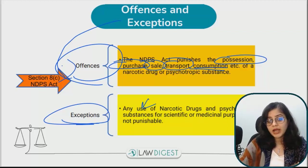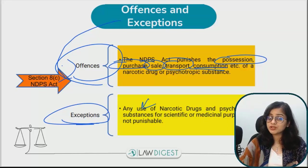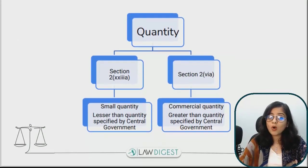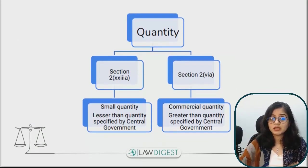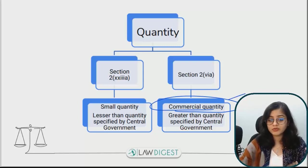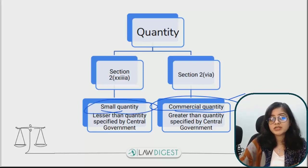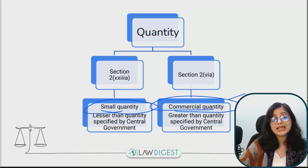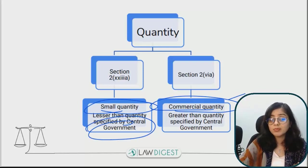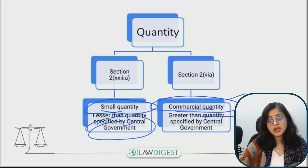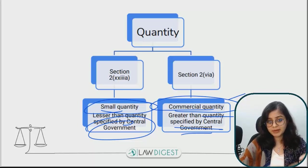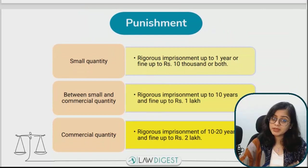Further, in the NDPS Act, there is also a variation in quantity, because punishment varies according to quantity. The quantities are: small quantity and commercial quantity. Commercial quantity is further divided into intermediate and commercial quantity. Small quantity is when you have drugs in a quantity lesser than what has been prescribed by the government. Commercial quantity is when you have drugs in a quantity more than what has been prescribed. According to this, the punishment also varies.